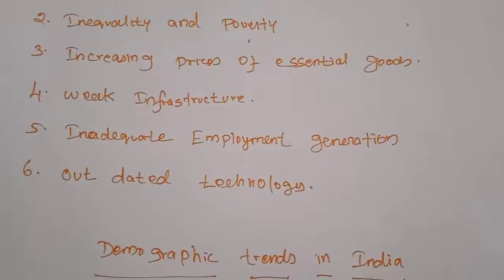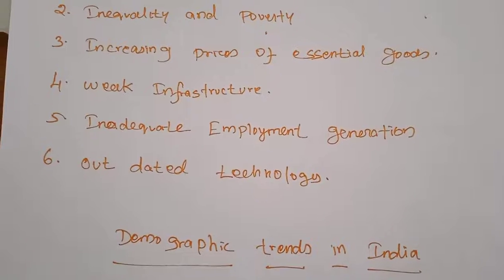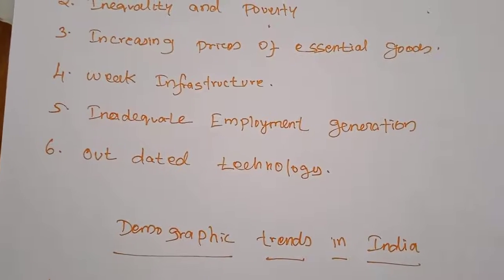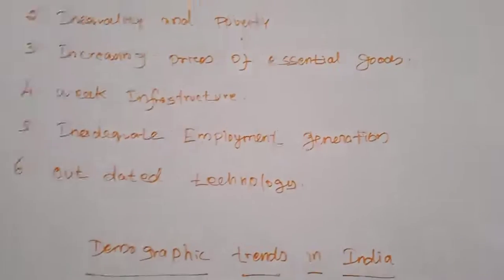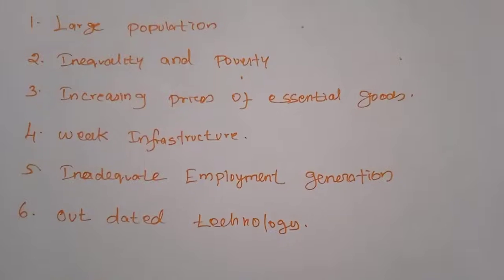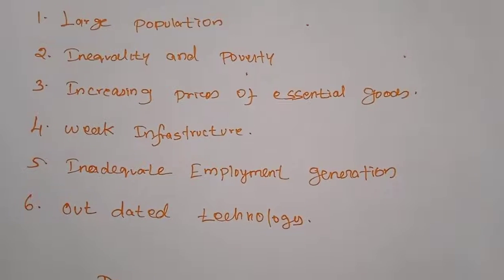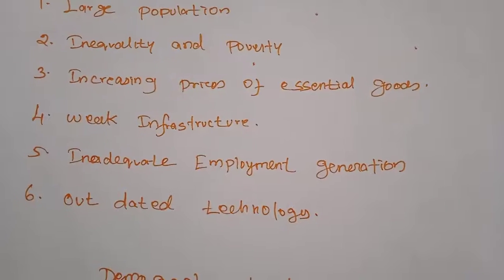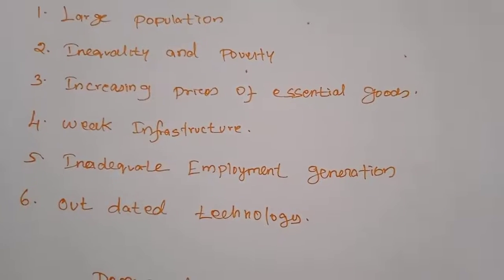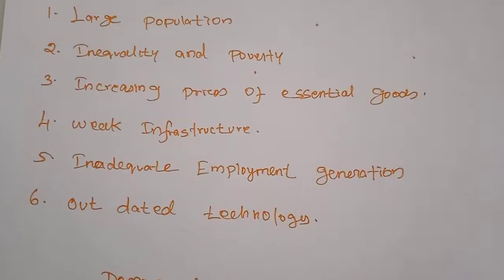Next, outdated technology. The level of technology in agriculture and small scale industry is still outdated and obsolete. Outdated technology is used in the agricultural sector and even in the backward industrial sectors. Because of this, we will never produce more, and our Indian economy will not grow.